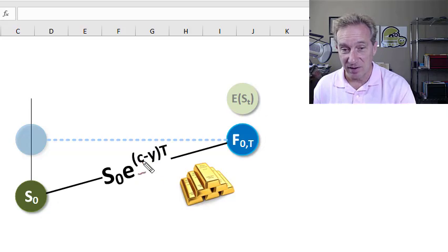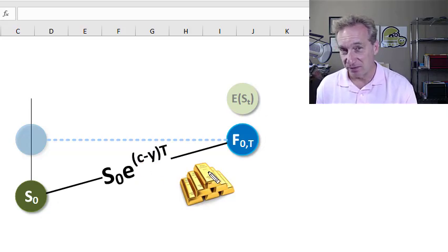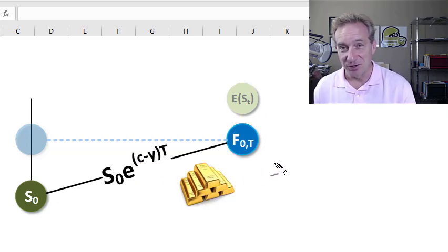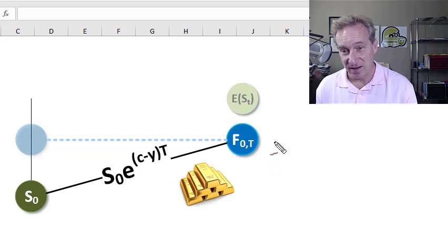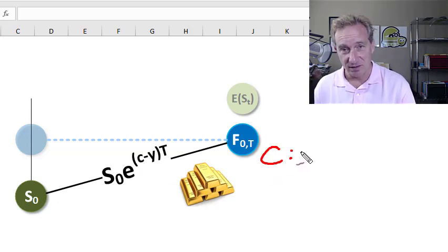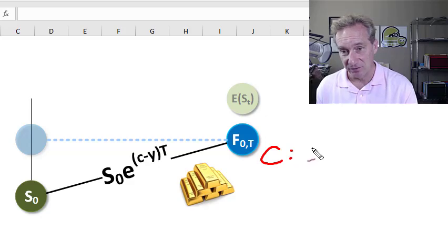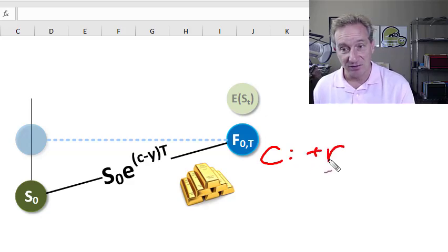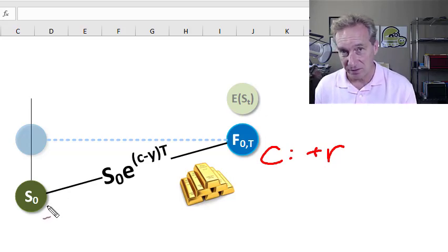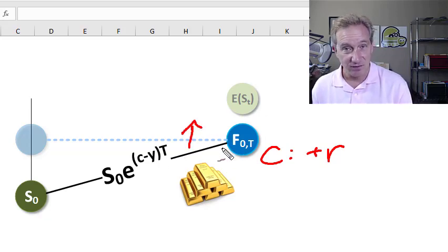Cost of carry denoted by small c, and we said based on John Hull, this could contain up to three factors. Any commodity, whether investment or consumption, is going to have a positive r for the risk-free rate, that is to say we need to borrow or incur the opportunity cost of funds in order to purchase the spot commodity.